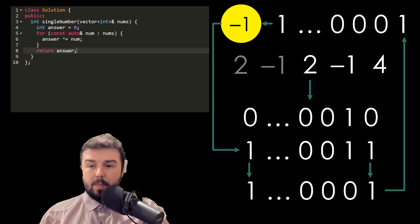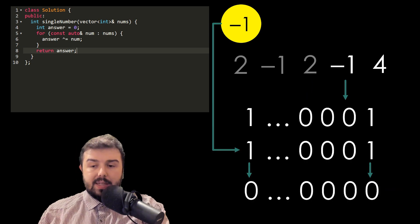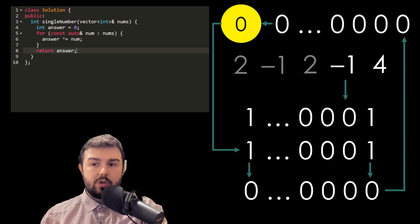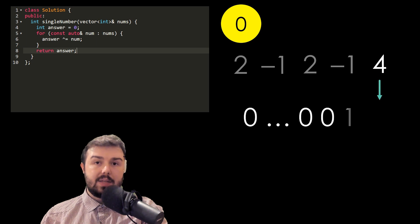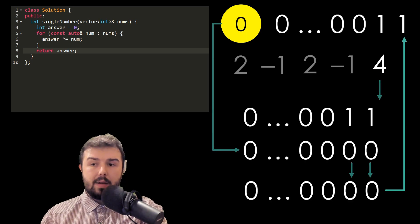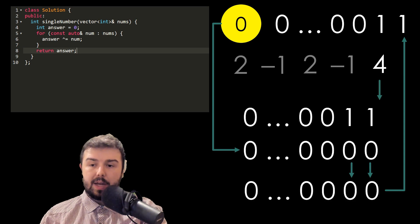When we perform the next operation, these numbers are the same and they just destroy each other, which results in zero. As we already know, any number XOR zero will be the same number. Sorry, there is a mistake in the animation. So we have 4 as the answer.